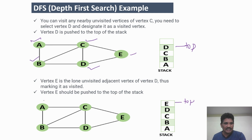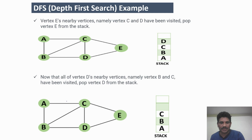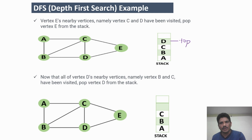Now, are there any other adjacent vertices of E? There are no other adjacent vertices of E, so we use backtracking and pop E from the stack. E's nearby vertices, C and D, have both been visited, so pop E. Now D is the top of the stack. D's adjacent vertices are B, C, and E — all have been visited — so pop D from the stack as well.